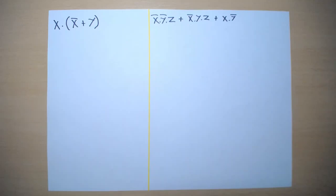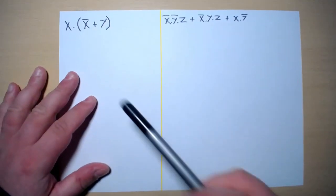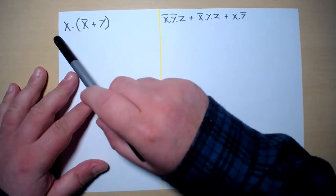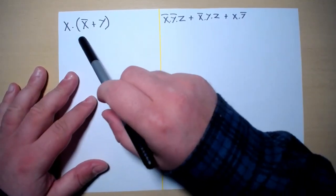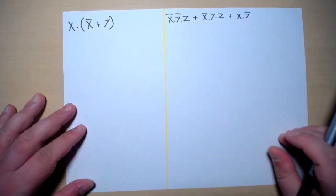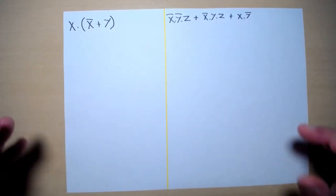In this video I am going to work out some exercises to show you how to use boolean algebra to minimize boolean expressions. Let's start from the first one where we have X into X-naught or Y.